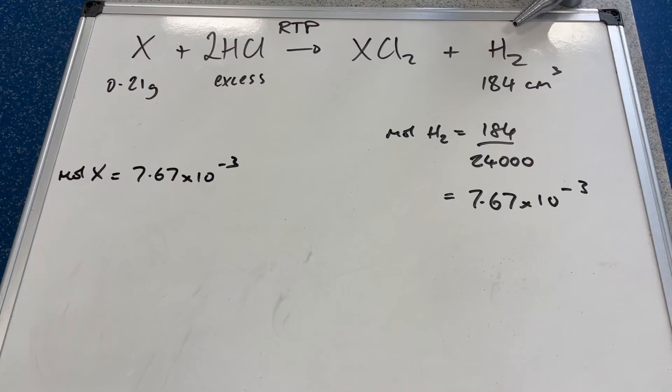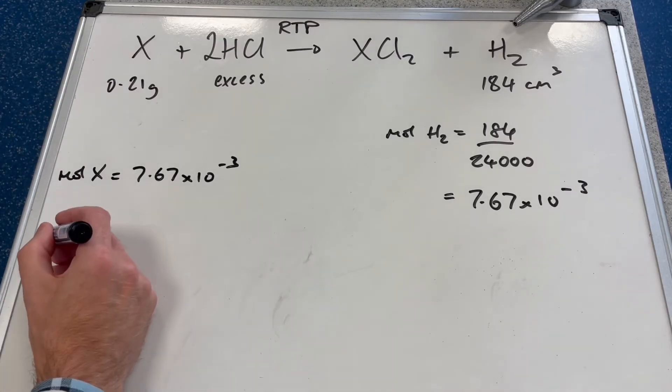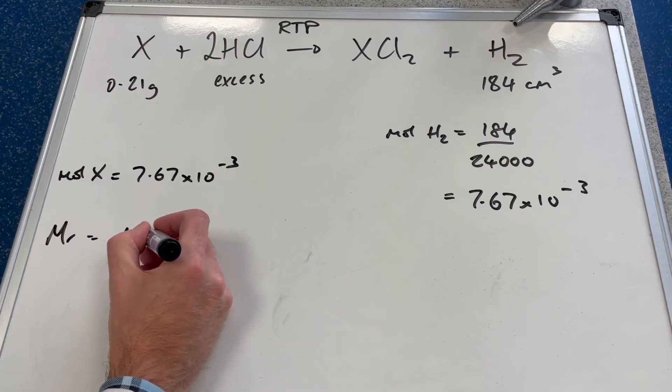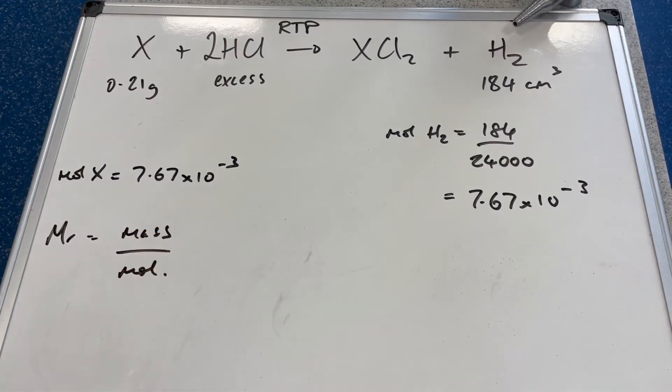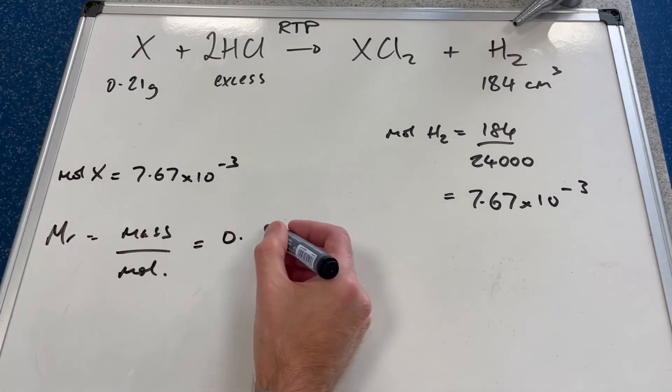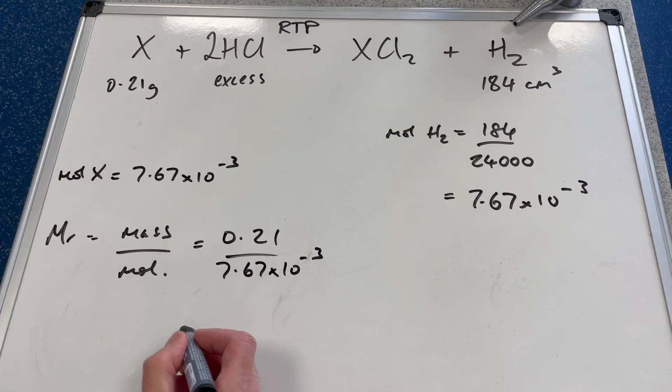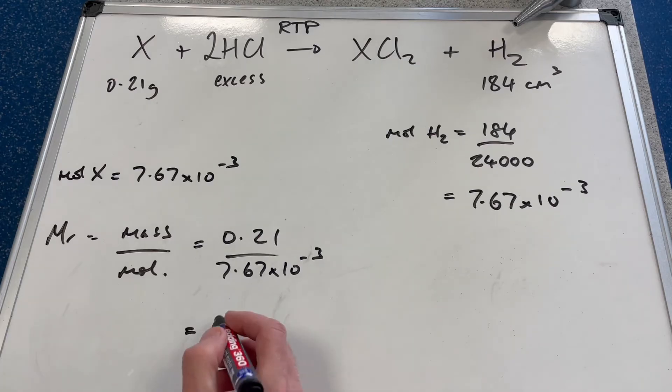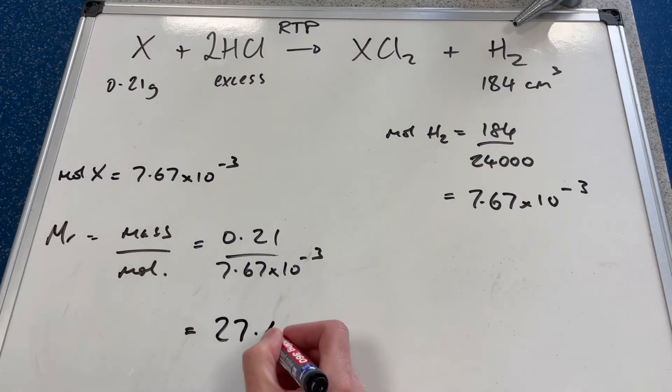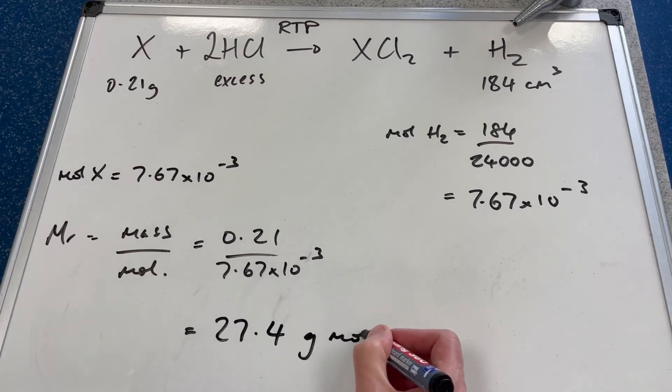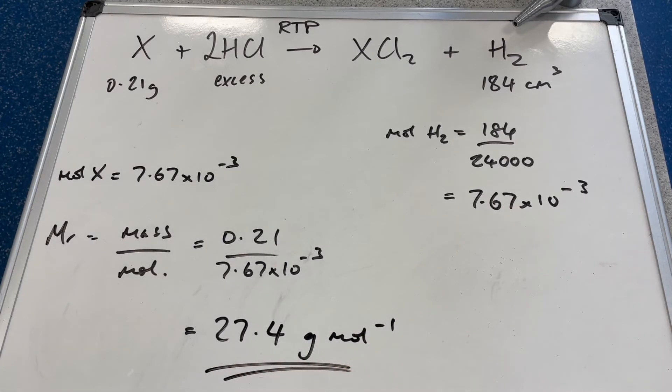We want the MR of X. Remember MR is calculated by mass in grams divided by moles. We've got both of those - there's the mass in grams, there's the moles. So 0.21 divided by 7.67 × 10⁻³. That's coming out at 27.4 grams per mole. The MR of X from our results is 27.4.